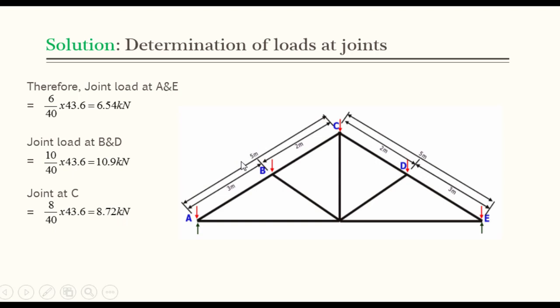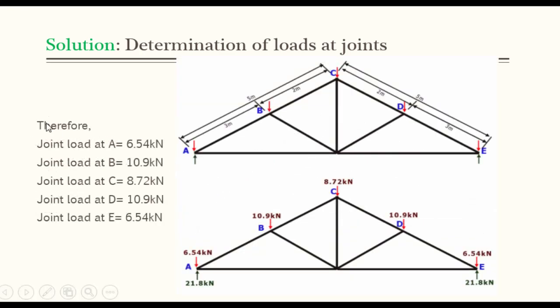We have determined the joint loads at A, B, C, D, and E. Therefore, joint load at A is 6.54 kilonewtons, joint load at B is 10.9 kilonewtons, joint load at C is 8.72 kilonewtons, joint load at D is 10.9 kilonewtons, and joint load at E is 6.54 kilonewtons.